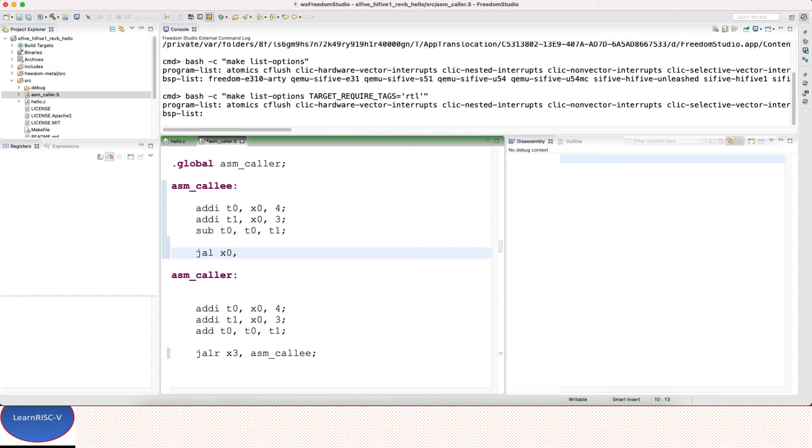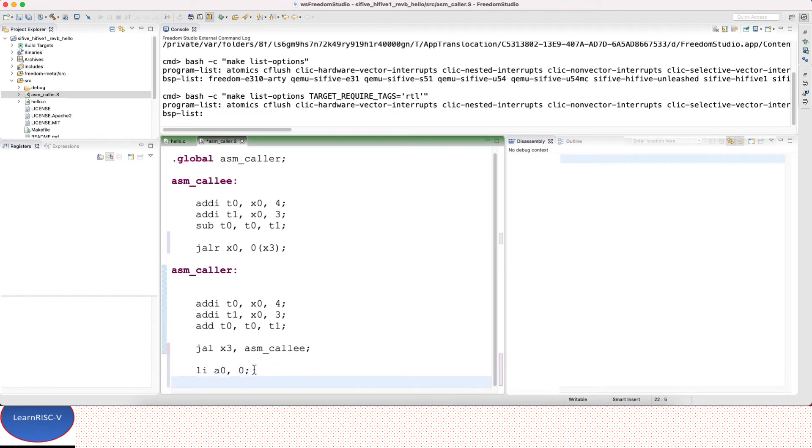Jump and link register, I'm going to use x3 here and the offset I can use the label itself. From here I should return back to the caller, so I'll just use jump and link and I don't want to store this return address. I can use x0 and the offset should be... I just want to keep this dummy instruction so that I will get the address of this next instruction.